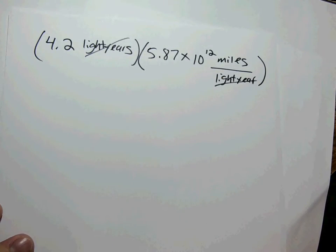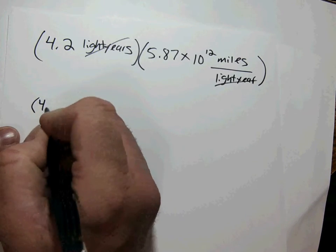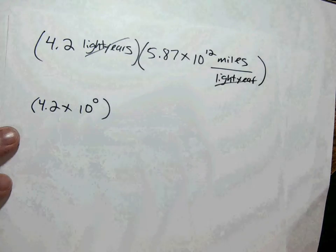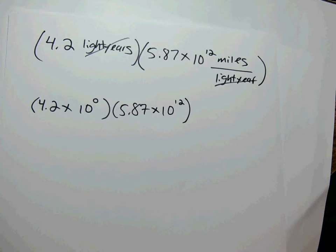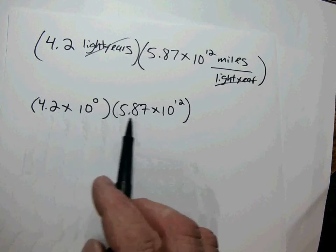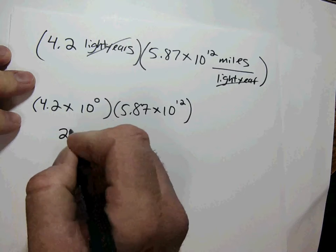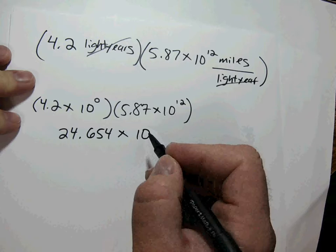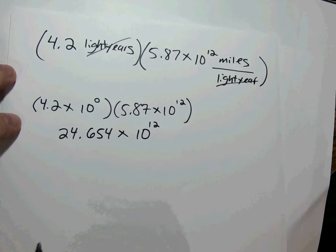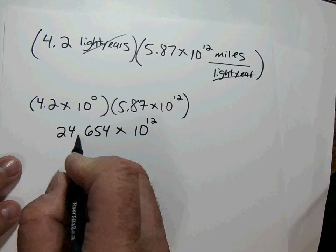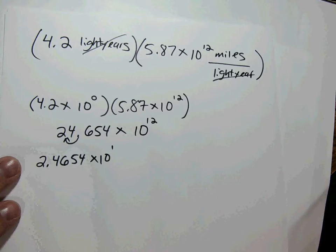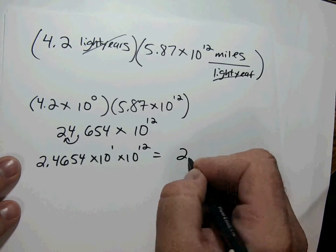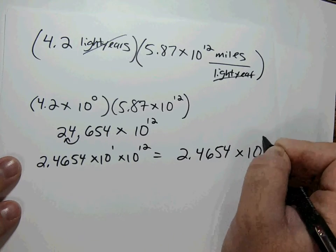We're left with just miles. We can write it as 4.2 times 10 to the 0 times 5.87 times 10 to the 12. Multiplying the coefficients gives 24.654, and adding the exponents gives 10 to the 12. That's not scientific notation, so we correct it: 2.4654 times 10 to the 1, times 10 to the 12, equals 2.4654 times 10 to the 13.